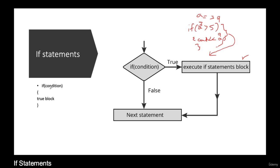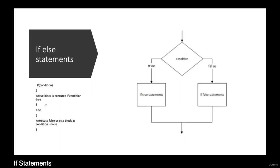In C++ the syntax for the if statement is: use the if keyword, then put the condition in brackets, followed by the true block.